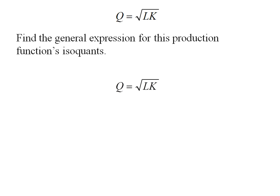To solve for K, I need to square both sides, then I need to divide by L, and my general expression for an isoquant is K equals Q squared over L.